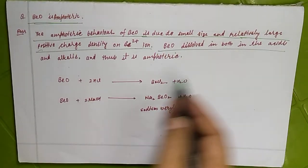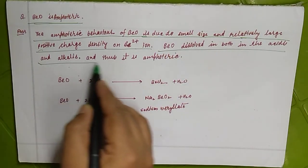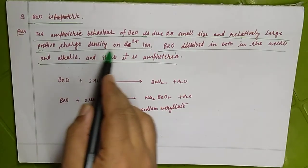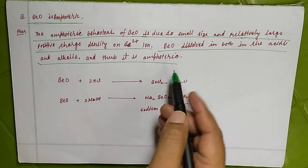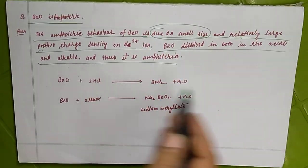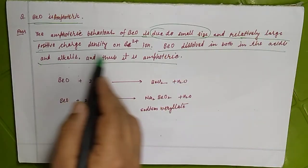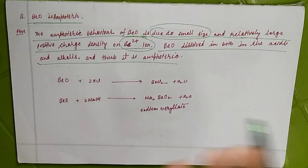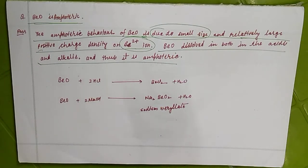Beryllium oxide dissolves in both acid and alkali, thus it is amphoteric in nature. Why is beryllium oxide behavior amphoteric? Because it has the small size of the cation and large positive charge density of beryllium 2+ ion. Small size results in large positive charge density.